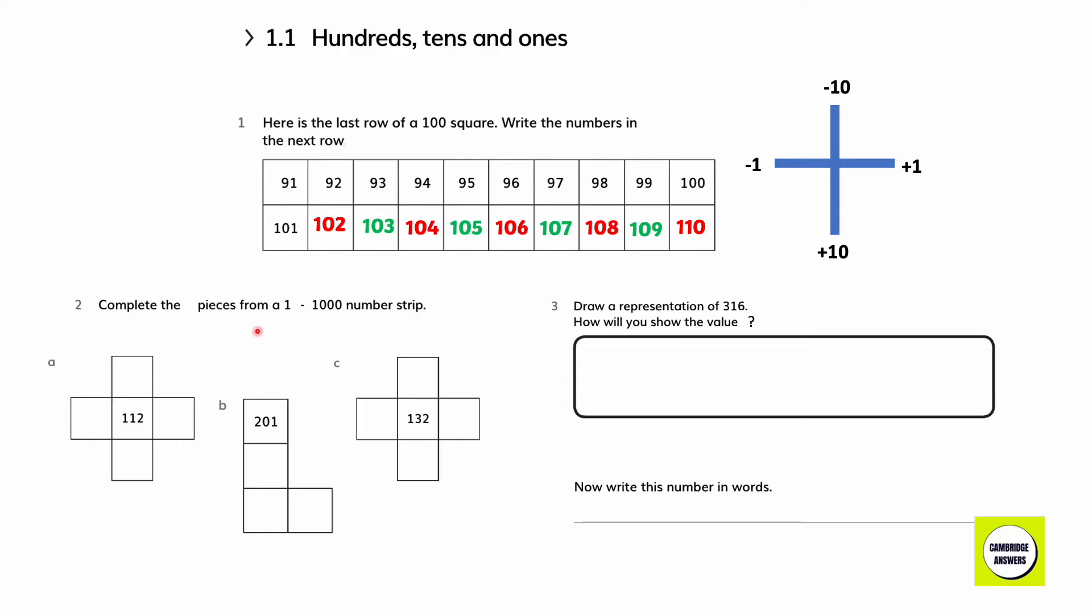Complete these pieces from a 1 to 1000 number strip. Just like the hundredth square, when we want to move down in a 1 to 1000 number strip, we have to add 10. When we want to move up, we have to subtract 10. When we want to move ahead, we have to add 1. And when we want to move back, we have to subtract 1. Let's write the answers.